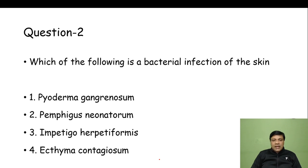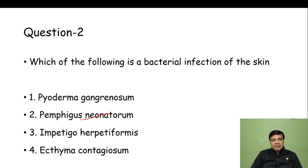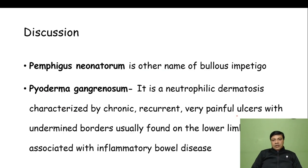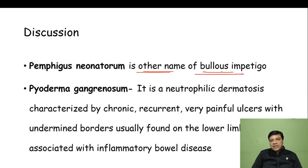The correct answer is choice 2 — pemphigus neonatorum, also called bullous impetigo, which is a bacterial infection caused by Staphylococcus aureus. No one gave the correct answer, so let's discuss. Pemphigus neonatorum is another name for bullous impetigo, caused by Staphylococcus aureus.